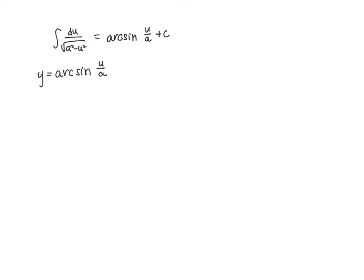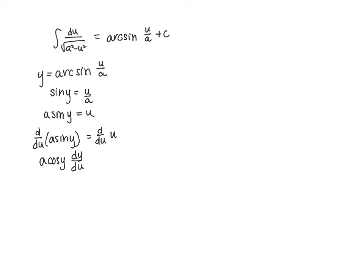Now let's unsolve this — let's get it in terms of sine. If this is the arc sine, then what we know is that the sine of y equals u over a, and so a sine y equals u. Let's do some implicit differentiation. If we take the derivative with respect to u of a sine y and the derivative with respect to u of u, we get a cosine y times dy/du equals 1. Solving for dy/du, we get 1 over a cosine y.